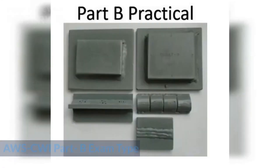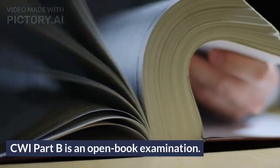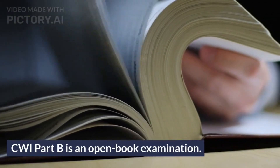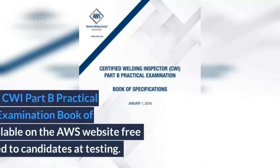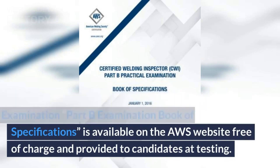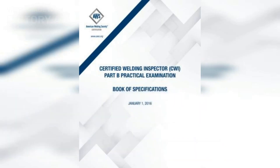AWS CWI Part B Exam Type. CWI Part B is an open book examination. The reference for the CWI Part B Practical Examination — the Part B Examination Book of Specifications — is available on the AWS website free of charge and is provided to candidates at testing.